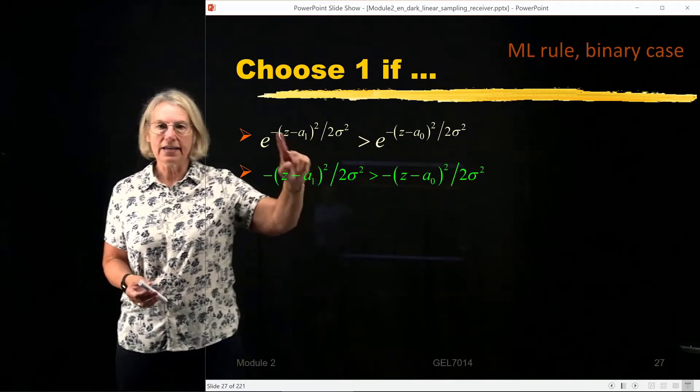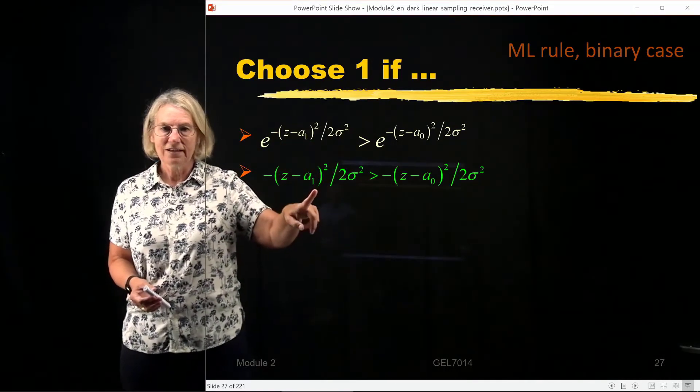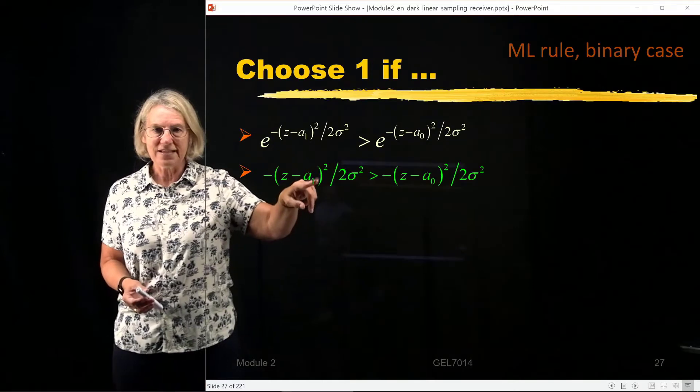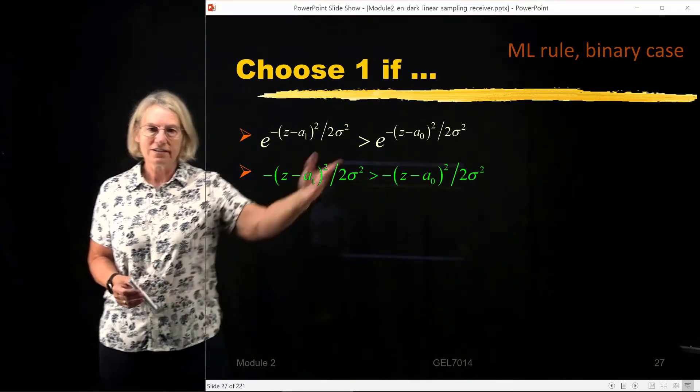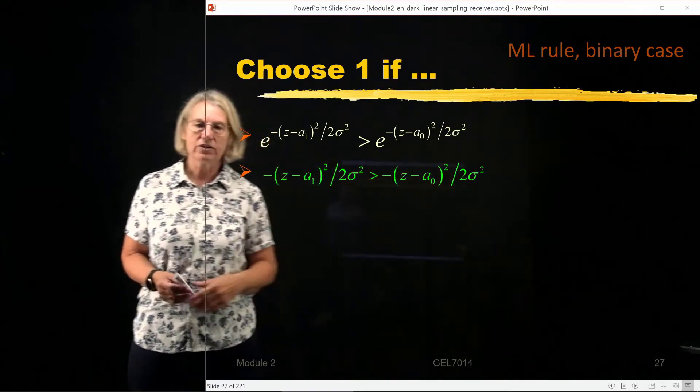And so I get here the exponent which is minus (z - a₁)² divided by 2 sigma squared greater than the other.